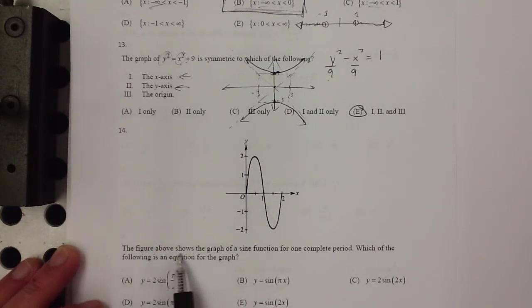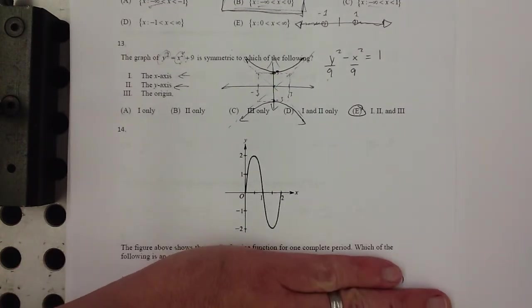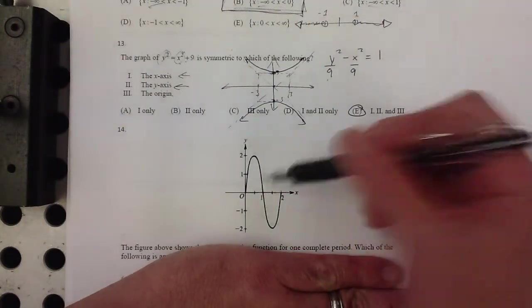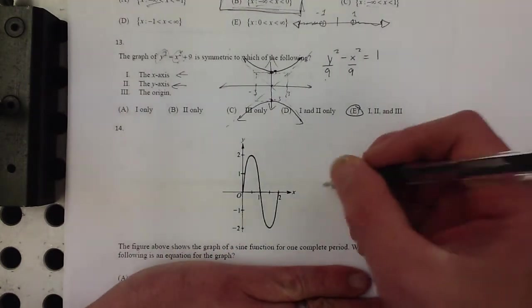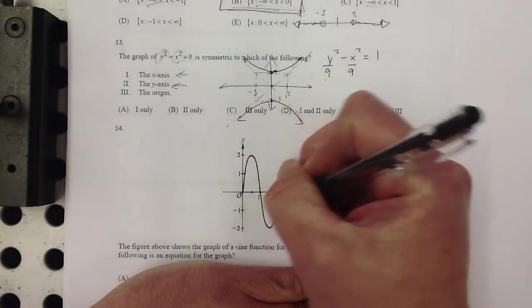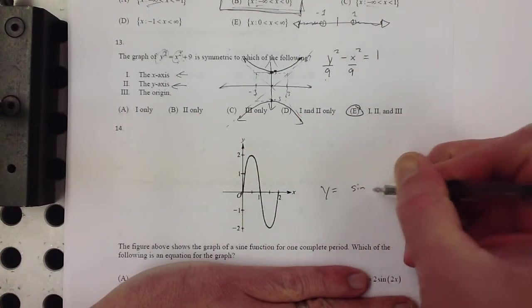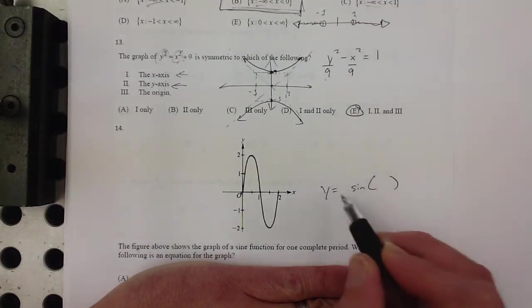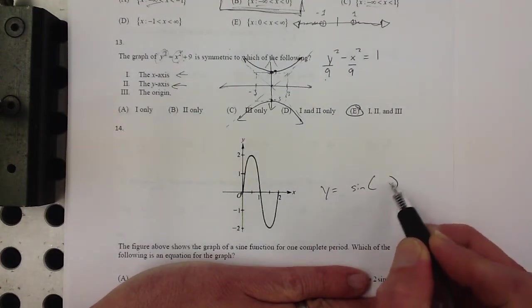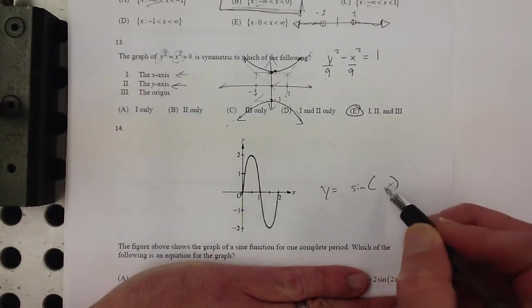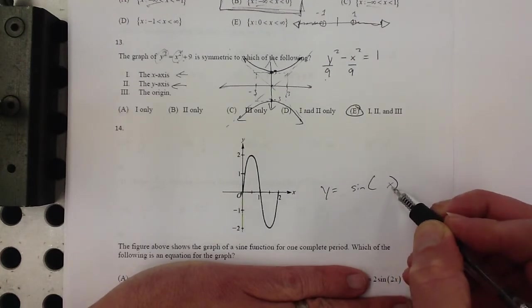Number 14. Figure shows the graph of a sine function for one complete period. Which of the following is an equation for the graph? I'm not going to look at those. I'm just going to look at this and try to create that graph. So it's a sine wave, right? It starts at the origin. So y equals sine of, it might be a number here and a number here, right?